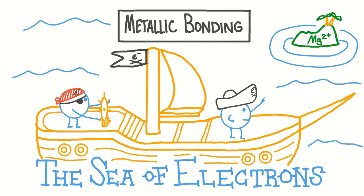Metallic bonding. The buildings we live in, the vehicles we ride in, the device we're watching this video on — they all harness the characteristics of metals in particular ways. But why do metals behave the way they do? Well, it has to do with the arrangement of their atoms and the electrons from those atoms. Namely, their valence electrons float freely in a sea of electrons. In this video, we will learn how to describe metallic bonding and the effect it has on the physical and chemical properties of metals.